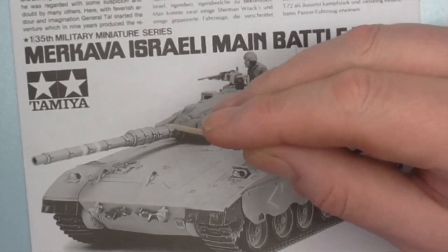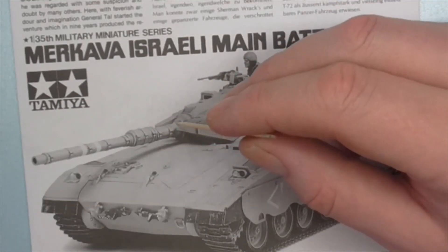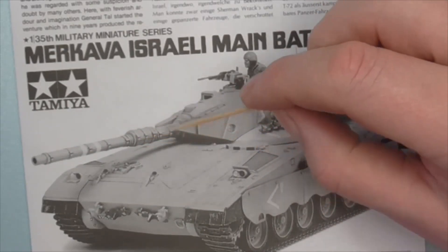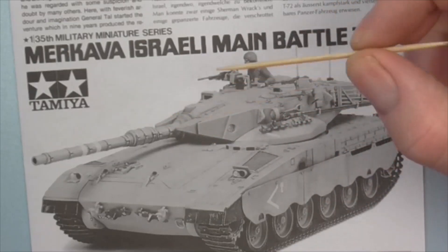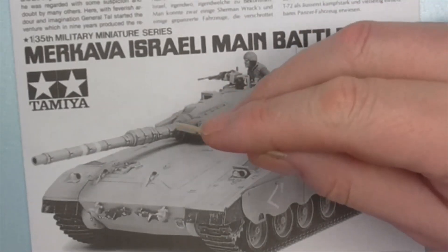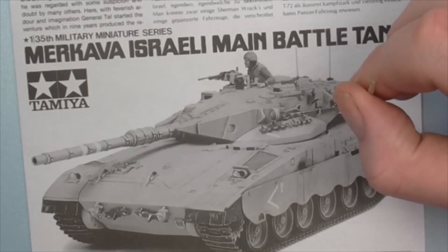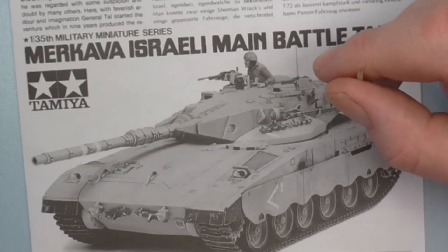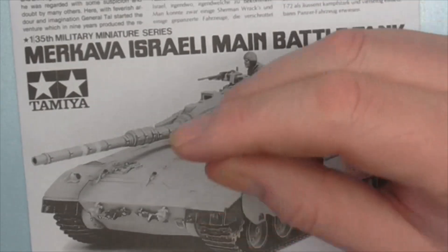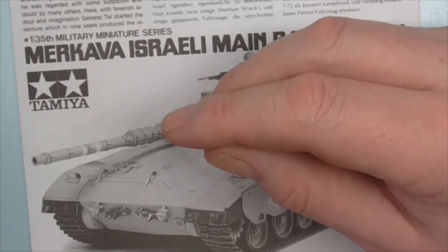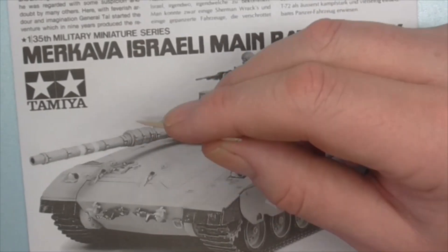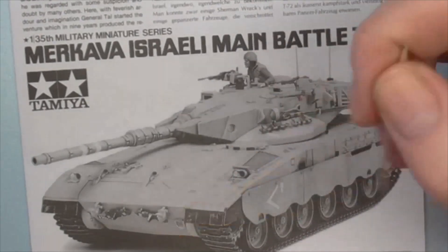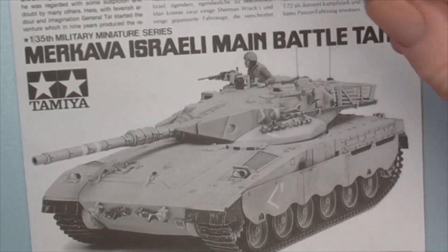This Mark 1 has the older 105 rifled gun. I believe it was a license-built copy of a British one. It has a 900 horsepower diesel engine. Both of these would be changed in later marks. I believe it's about 1,900 horsepower now. And it's got a 120mm smoothbore gun, which is quite often like a lot of the other tanks in the world, because it can fire different missiles and stuff through the tube as well.